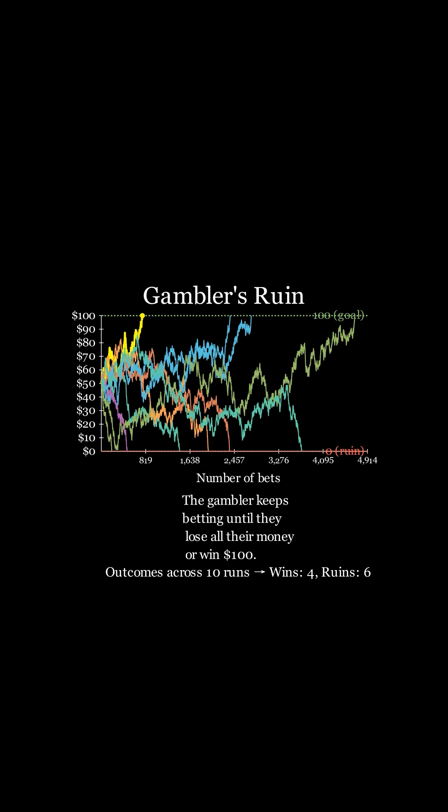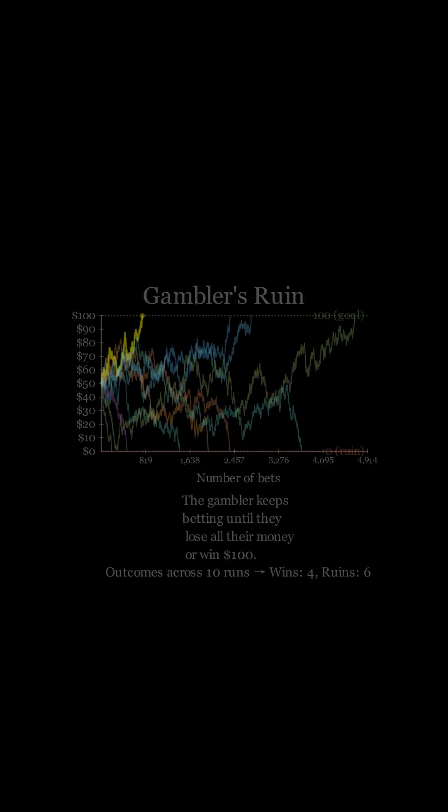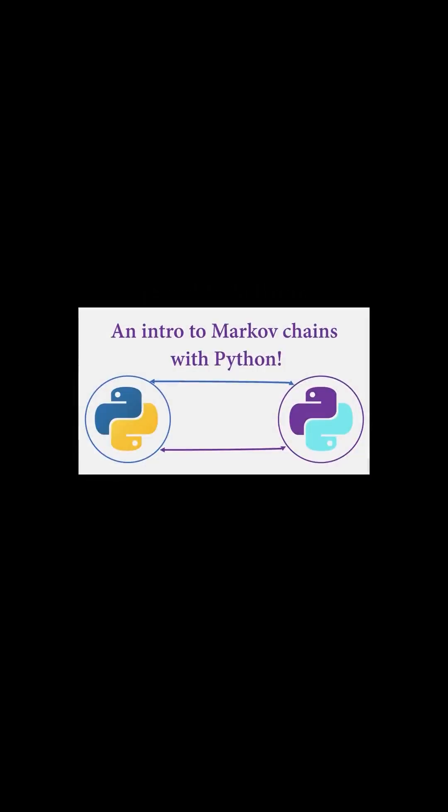This is illustrated through the simulation on the graph, where the gambler lost 6 times and won 4 times. If you want to learn more, check out my full tutorial on stochastic processes and Markov chains linked in the description. Happy coding!